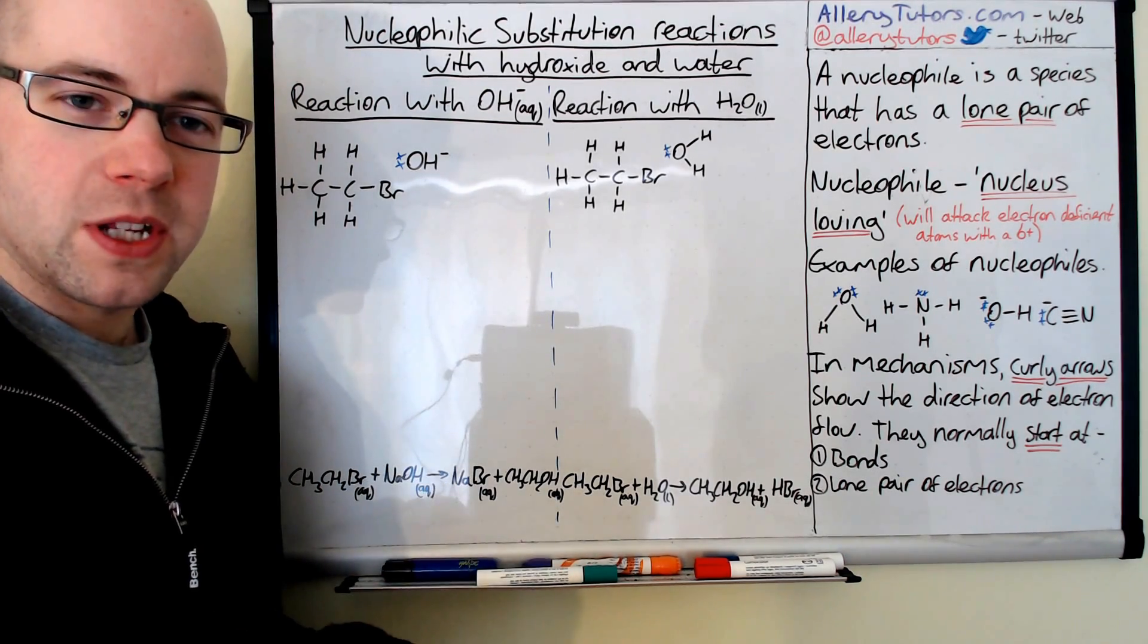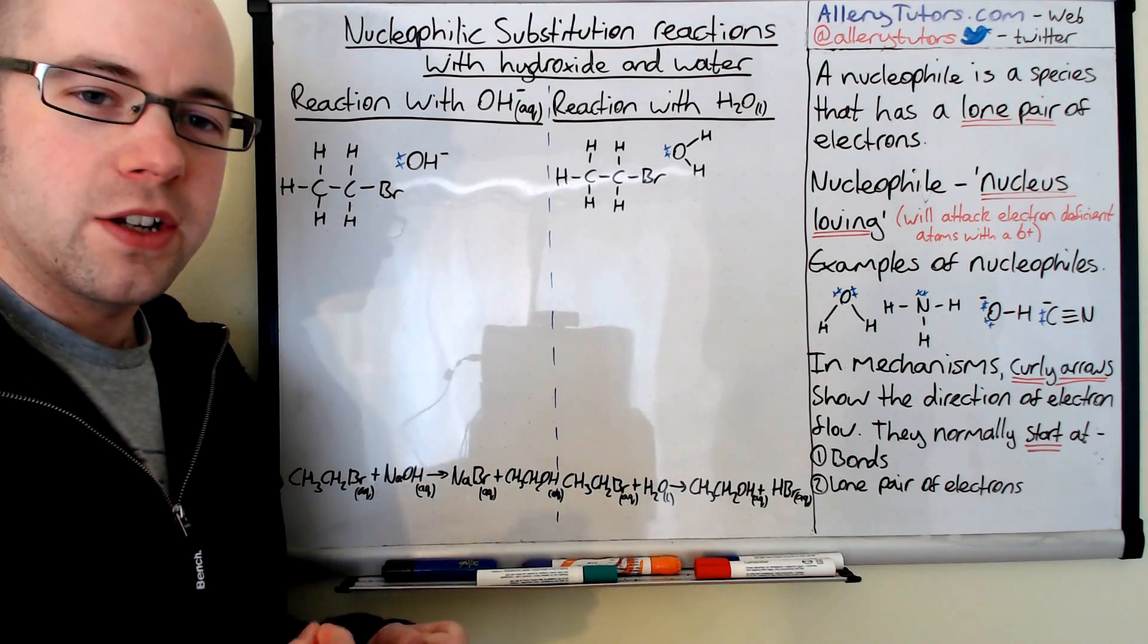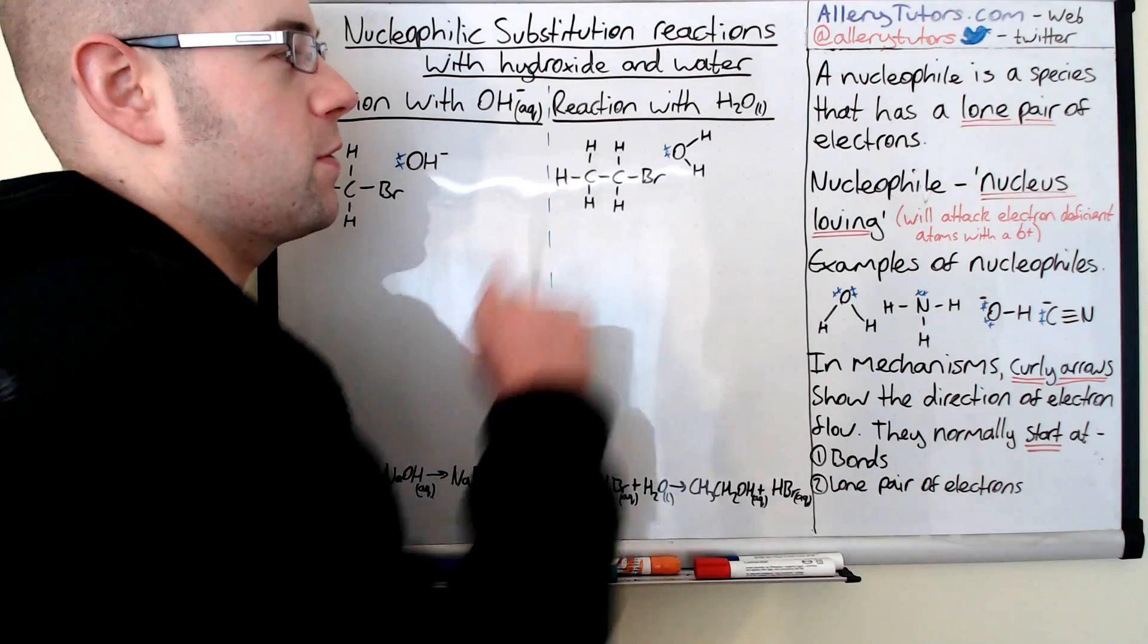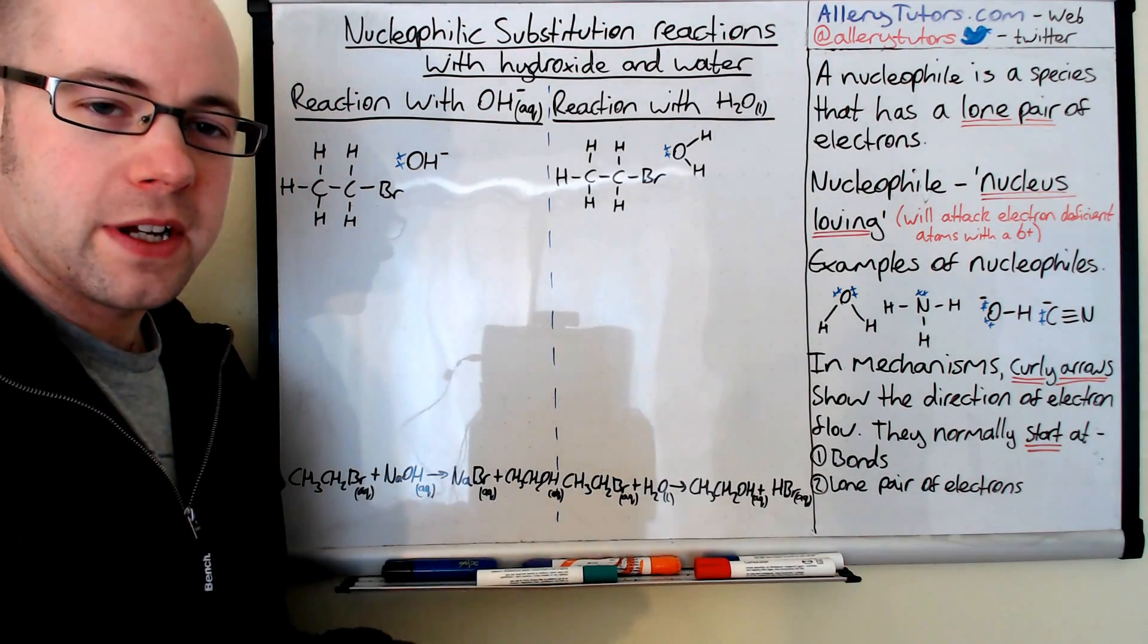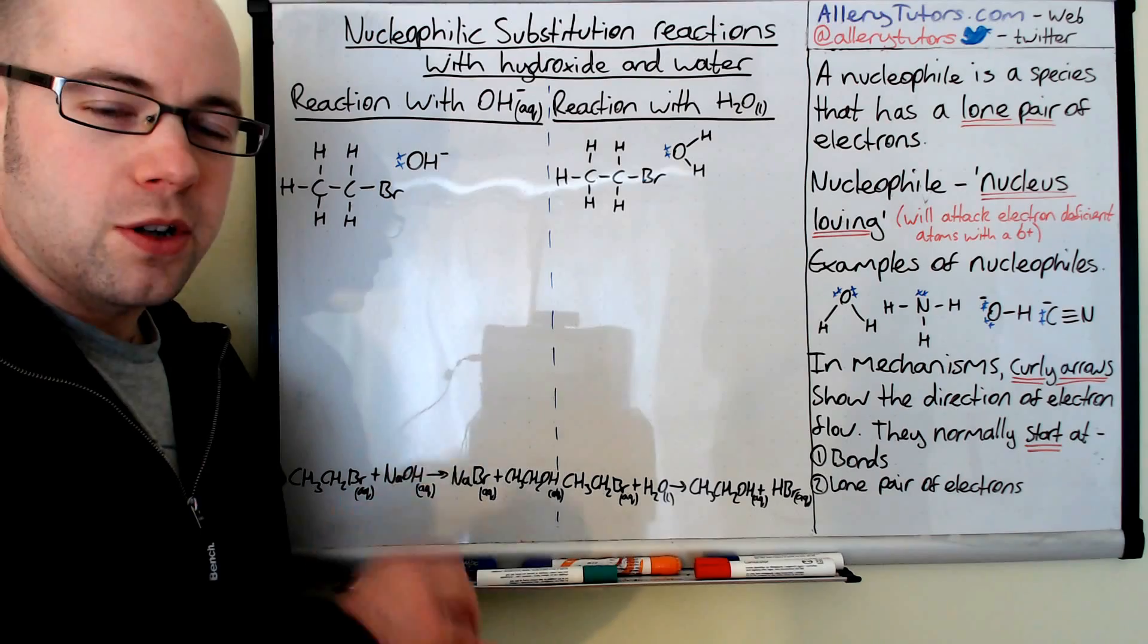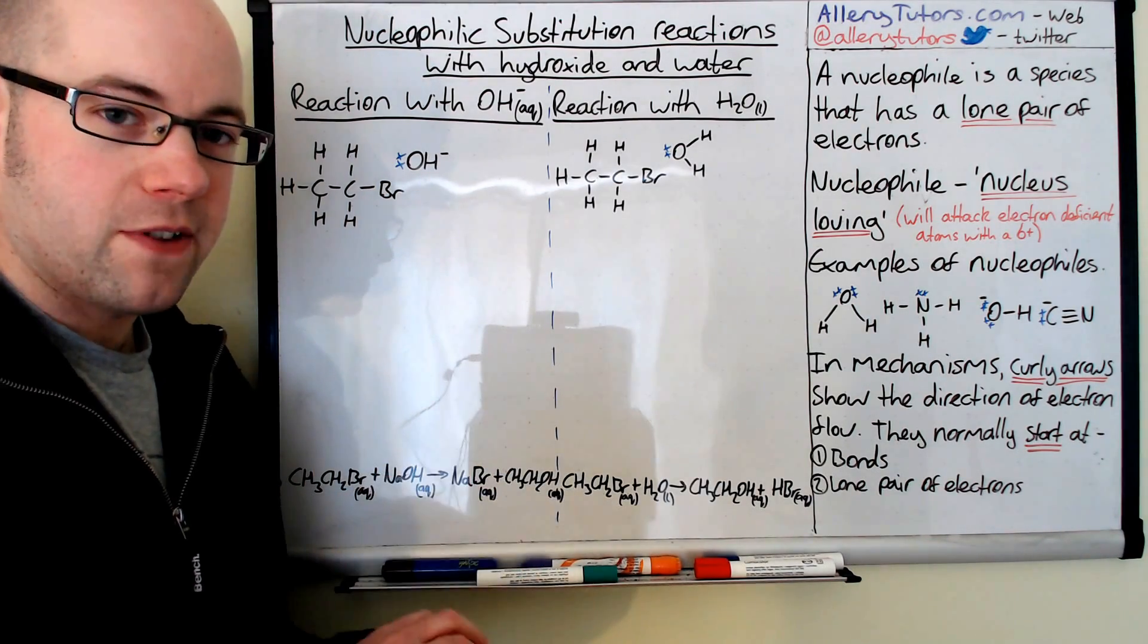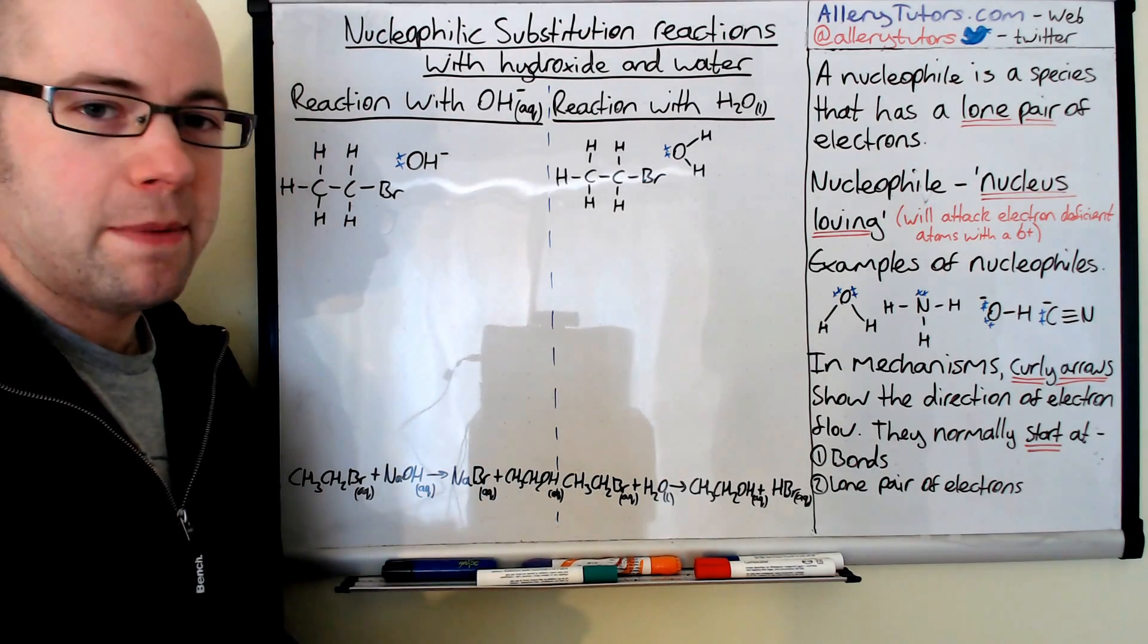We're going to look at the first word of the title which is nucleophilic. A nucleophile is just a species that has a lone pair of electrons. The word nucleophile means nucleus loving. So this is a species that will go for something that is delta positive or is electron deficient. I'll show you where these are as we go through some examples.